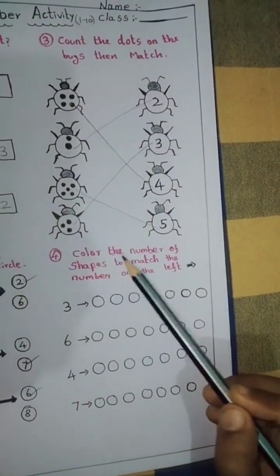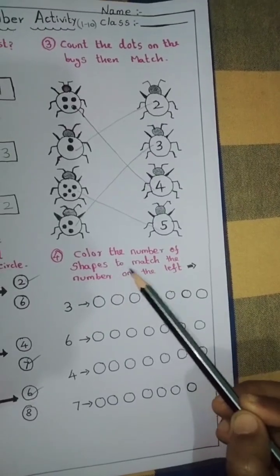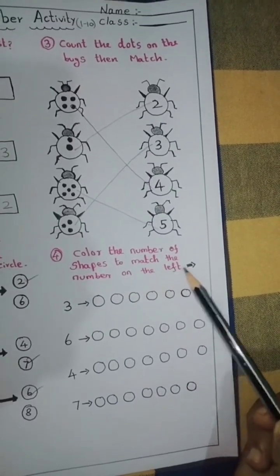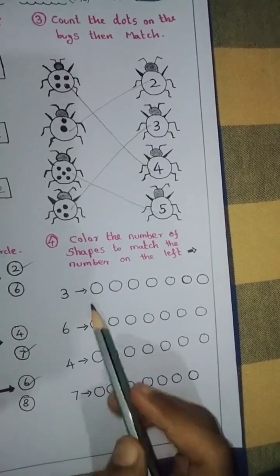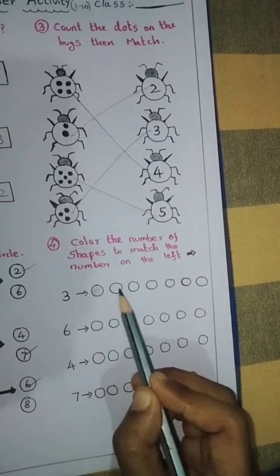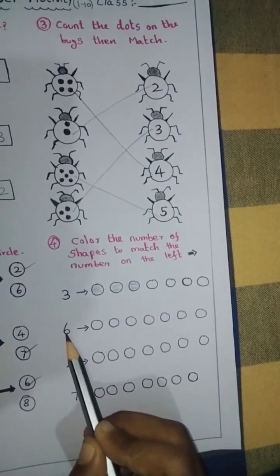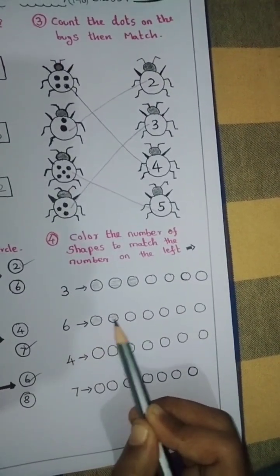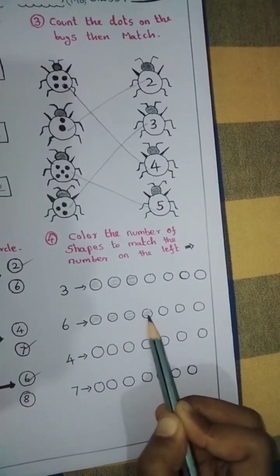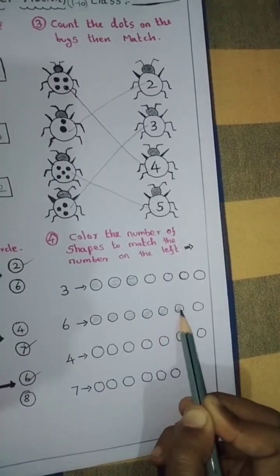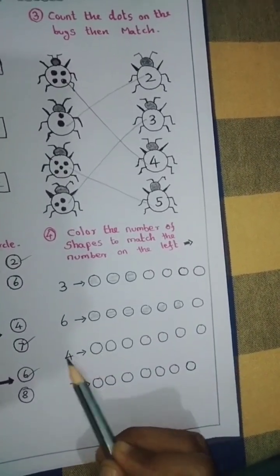Fourth, color the number of shapes to match the number on the left side. Number 3, shade 3 circles only. Next, number 6. 1, 2, 3, 4, 5, 6. Number 4, 1, 2, 3, 4, shade.